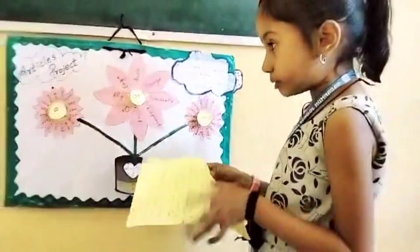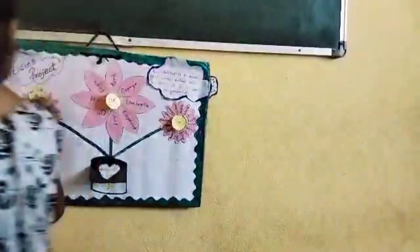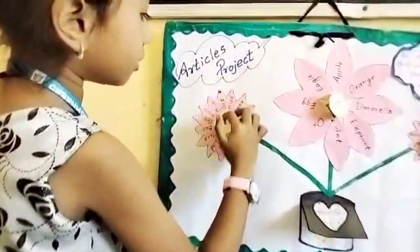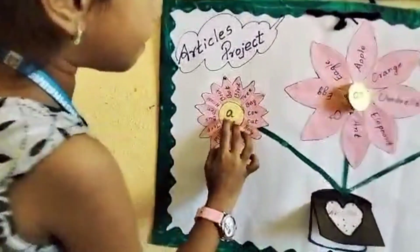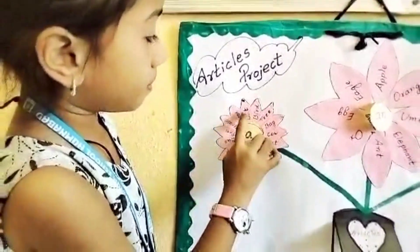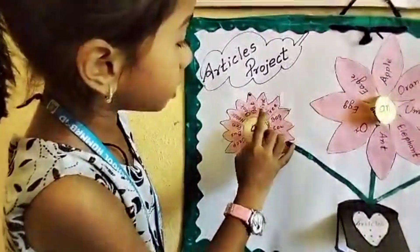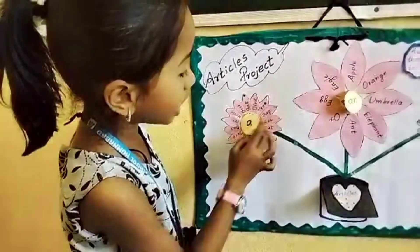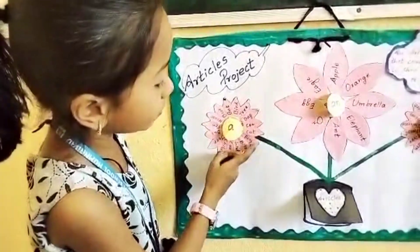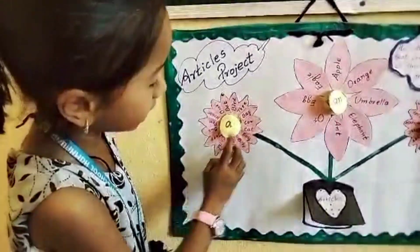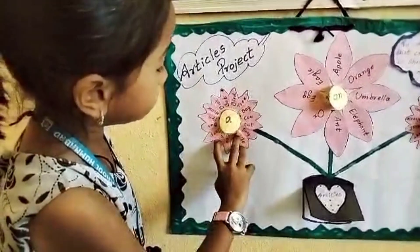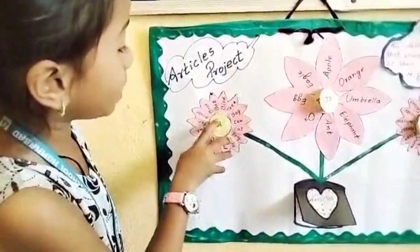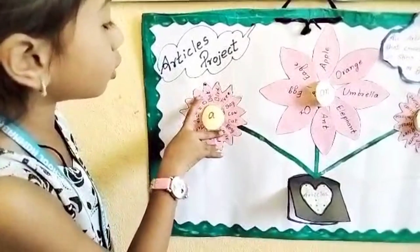When do we use A? We use A before a consonant sound. Example: a bat, a bird, a tree, a bat, a cow, a cat, a boy, a bike, a girl, a car, a child, a jeep, a bus, a pen, a house, a book.